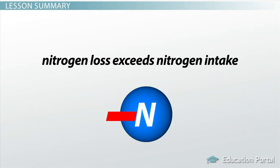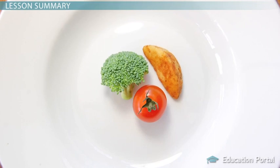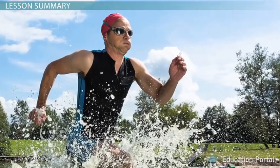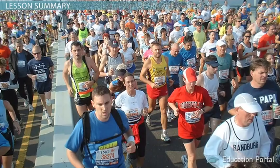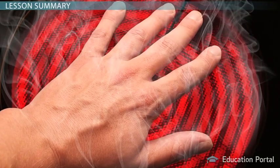When nitrogen loss exceeds nitrogen intake, a negative nitrogen balance occurs. This happens when protein intake is too low or protein breakdown is greater than synthesis. This can happen in a person on a severe or starvation diet, an athlete who over-trains, or a person recovering from injuries or burns.